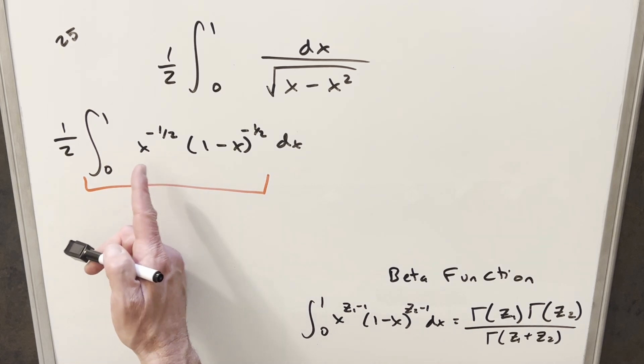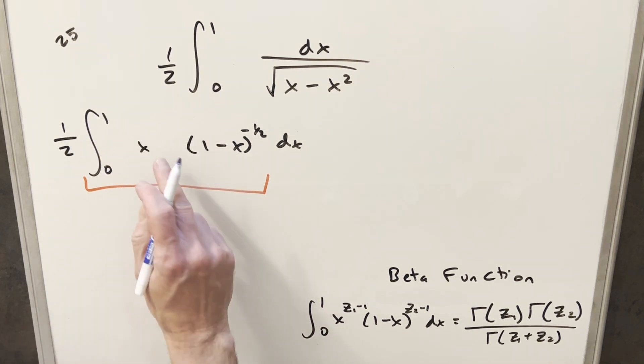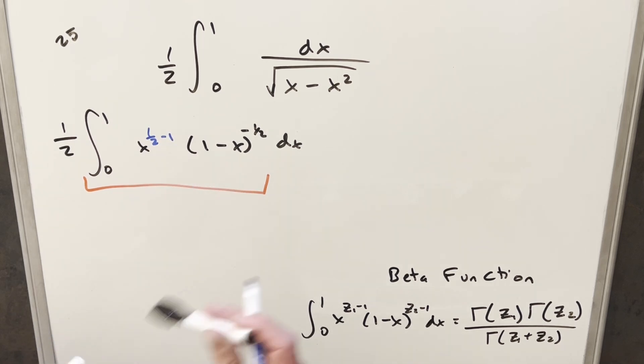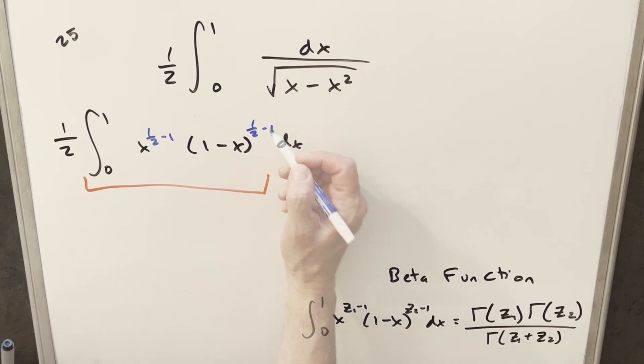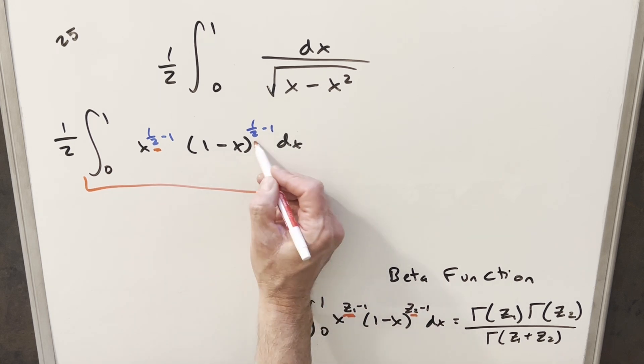Now, one thing I need on here, we have the exponent here as like z1 minus 1 and z2 minus 1. What I can do here is just kind of change it to get in the same forms. So for the exponent minus 1 half, I can write that as 1 half minus 1. And do the exact same thing for this one. We'll write this as 1 half minus 1 for our minus 1 half. And then doing it that way, for our z1 value, we're just going to have 1 half. And for our z2 value, we're going to have 1 half.